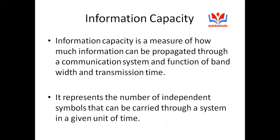Information capacity is a function of bandwidth and transmission time. This information capacity basically represents data in the form of digital data — that is, in terms of bits, which is binary information. Binary information means ones and zeros.